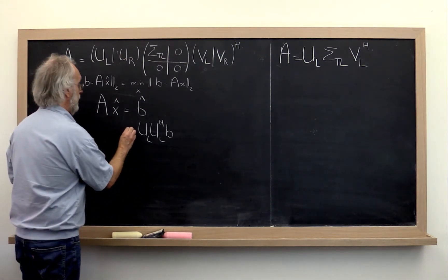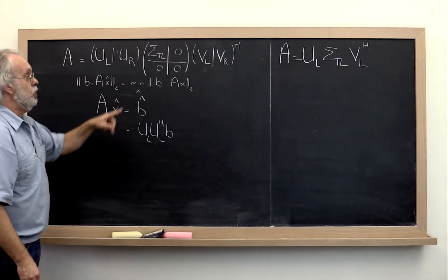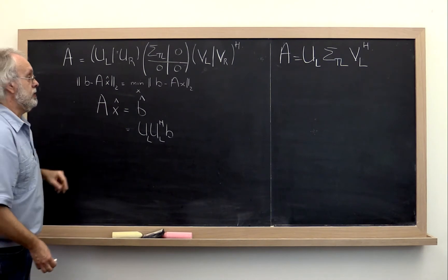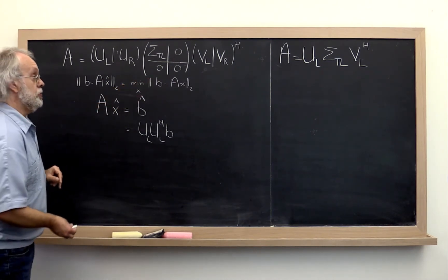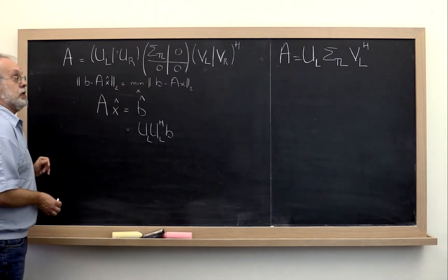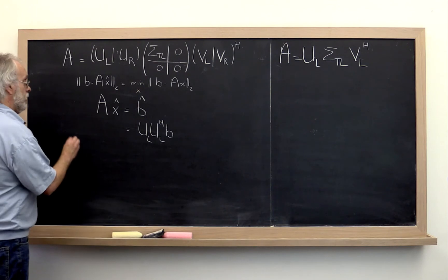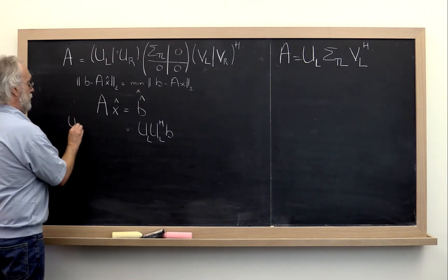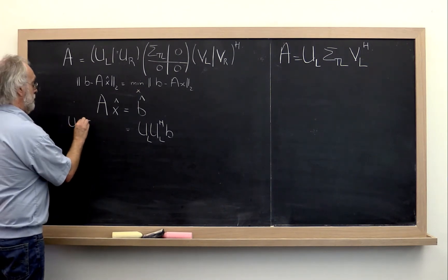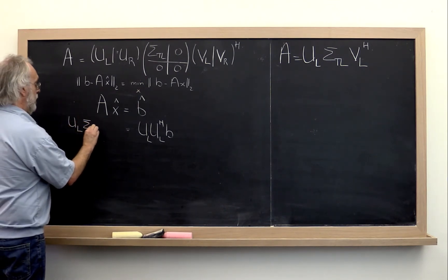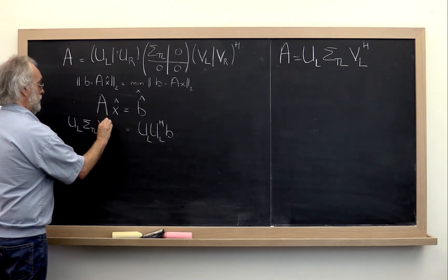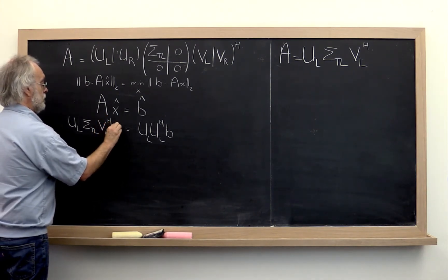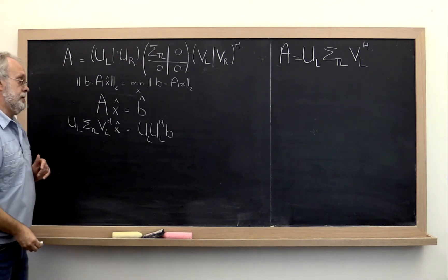The left-hand side we can replace by the reduced singular value decomposition. So we get UL times sigma top-left times VL Hermitian transpose times x-hat equal to that projection.